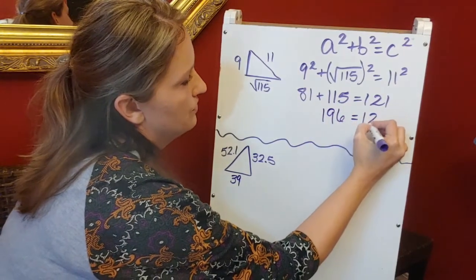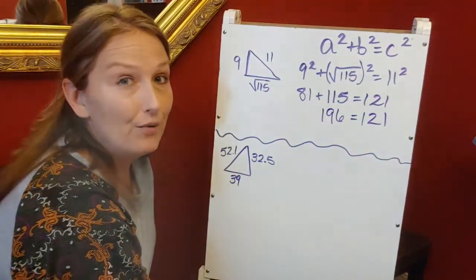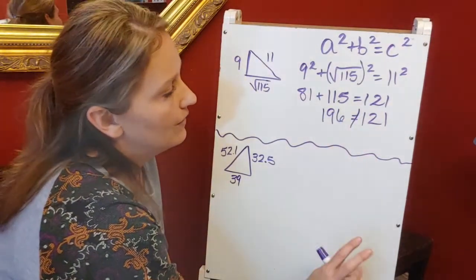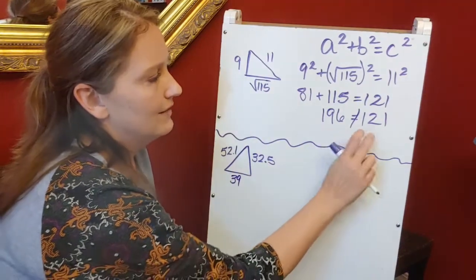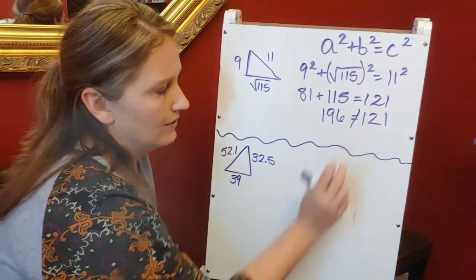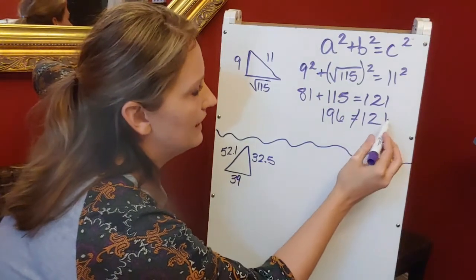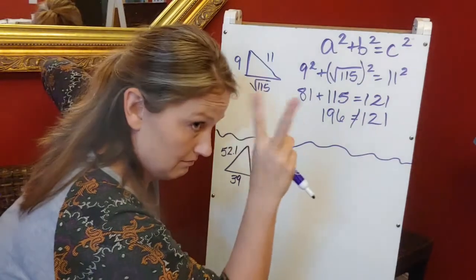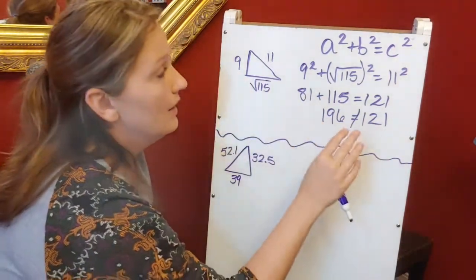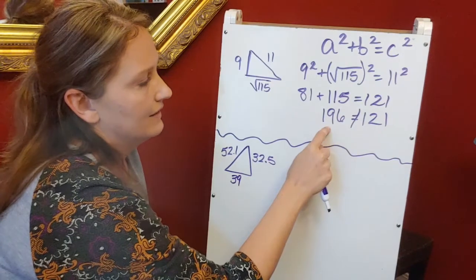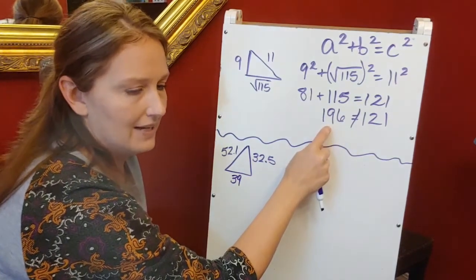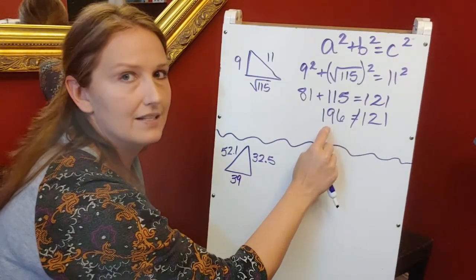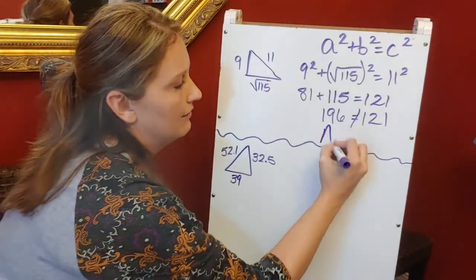look at is which side of the equal sign is the greater number. My longest side, my 11, my hypotenuse—if it were a right triangle, my C is less than the left side of this equation. When the number on the right is less than the left, I have an acute triangle.